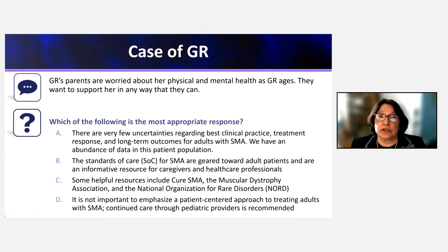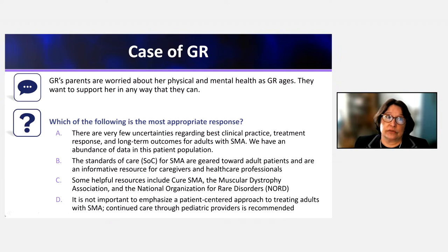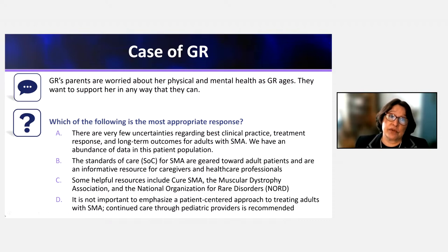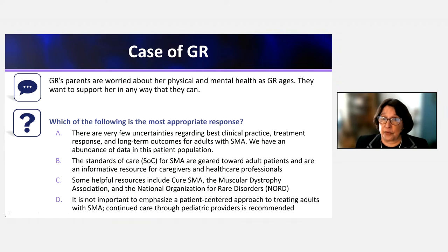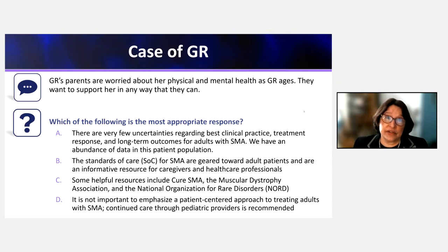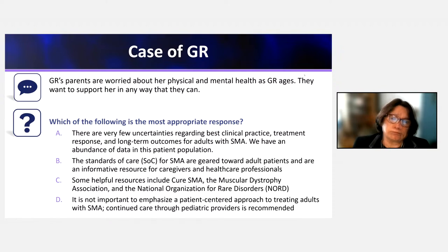GR's parents are worried about her physical and mental health as she ages and want to support her. The question is which response is most appropriate. The incorrect options are: that there are very few uncertainties regarding best clinical practice and long-term outcomes (we are in fact quite uncertain); that we have an abundance of data in this population; and that standards of care are geared toward adult patients. It is also incorrect that a patient-centered approach is not important, or that continued care through pediatric providers is recommended.